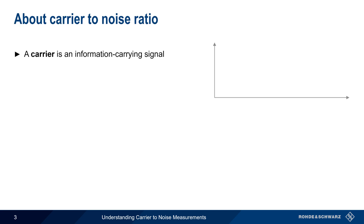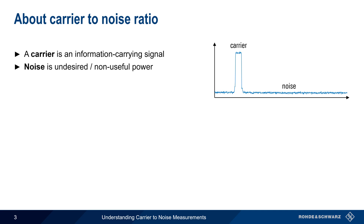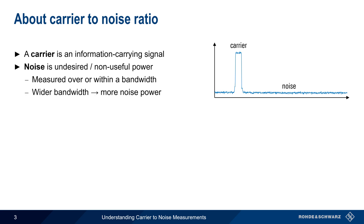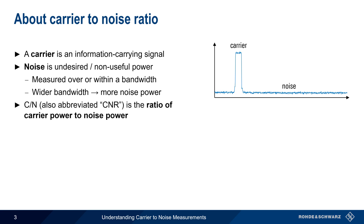In radio frequency systems, a carrier is a signal that conveys or carries information. In most cases, information is conveyed by changing the frequency, amplitude, and/or phase of the carrier. On the other hand, noise is undesired or non-useful power. Noise is normally measured over or within a frequency range or bandwidth, and therefore wider bandwidths will mean a greater amount of noise power. Carrier-to-noise ratio, also abbreviated CNR, is the ratio of the carrier power to the noise power.